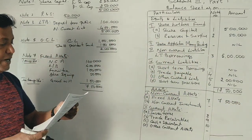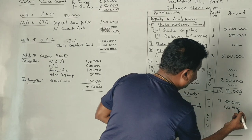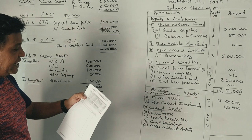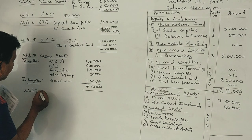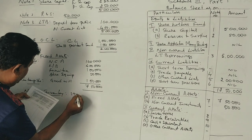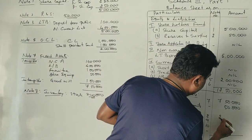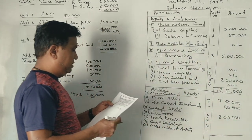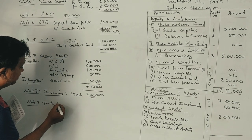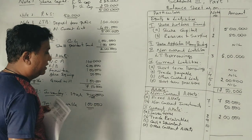Next, non-current investments are ₹50,000. Note number 8 is inventories — stock is ₹2 lakhs. Note number 9 is trade receivables — ₹1 lakh.